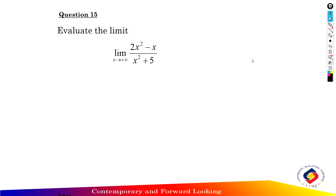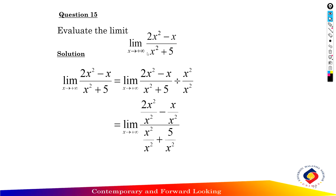Okay, question 15. Limit as x approaches positive infinity of 2x squared minus x over x squared plus 5. The first method here: find the highest degree of the denominator. The highest power of the denominator equals x squared — this is HPD.